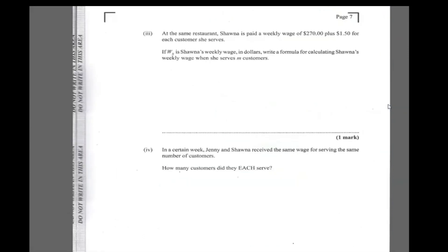Alright, it says at the same restaurant, Shauna is paid a weekly wage of $270 plus $1.5 for each customer she serves. Now it says if WS is Shauna's weekly wage, write a formula for calculating Shauna's weekly wage when she serves M customers. So Shauna is getting a very little pay, and I don't know why, because $270, she's probably just starting working at the place. So Shauna gets her basic amount of money, her basic $270, plus to each customer she serves M, she gets paid $1.5 for that. So 1.5 times M. So this is the formula representing Shauna's pay.